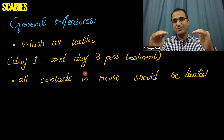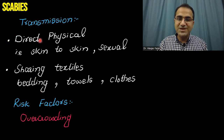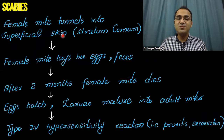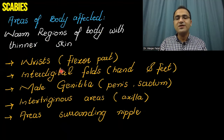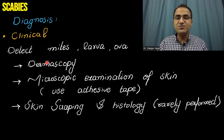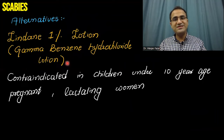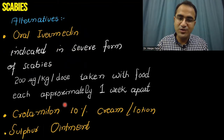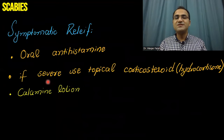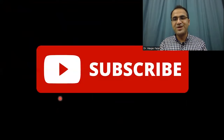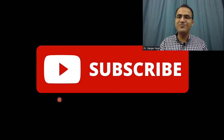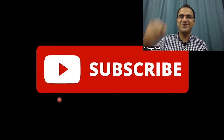In summary: scabies is caused by Sarcoptes scabiei; the female mite burrows the skin causing a hypersensitivity reaction; clinical features include pruritus at night, burning sensation, and lesions in warm thin-skinned areas; diagnosis is mainly clinical with dermoscopy if needed; drug of choice is permethrin 5%, with lindane and oral ivermectin for severe cases; symptomatic relief with antihistamines; and general measures including washing all textiles are essential.